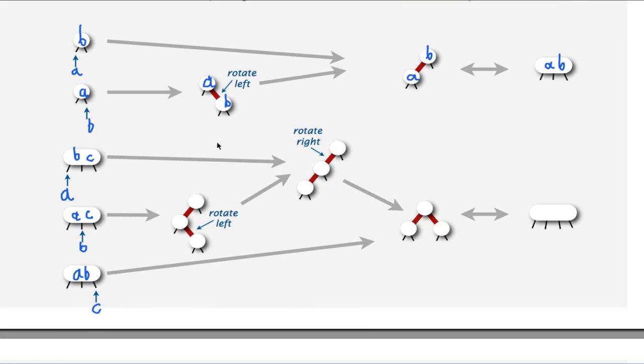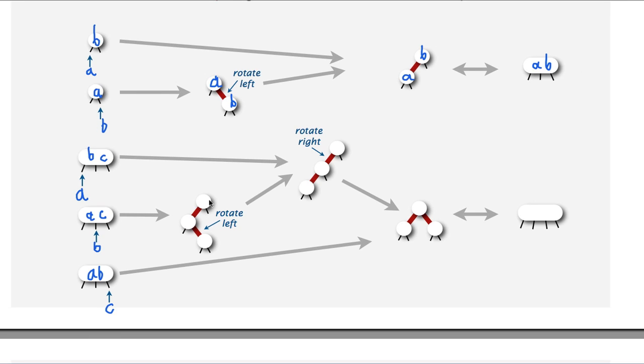Similarly, if we add a node to, if we add an element to a 3-node, we have three cases. Either we add the element before, in the middle, or after. And in all of these cases, we basically get to the same representation. So we have here, let's say, A, B, C, C here, and A here, and B here.